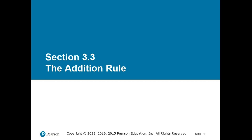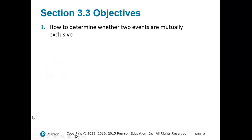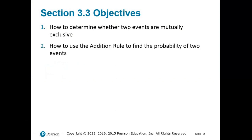This section rounds out the rules and formulas for probability. We're going to cover mutually exclusive events and how to use the addition rule to find the probability of two events. Let's dive in.